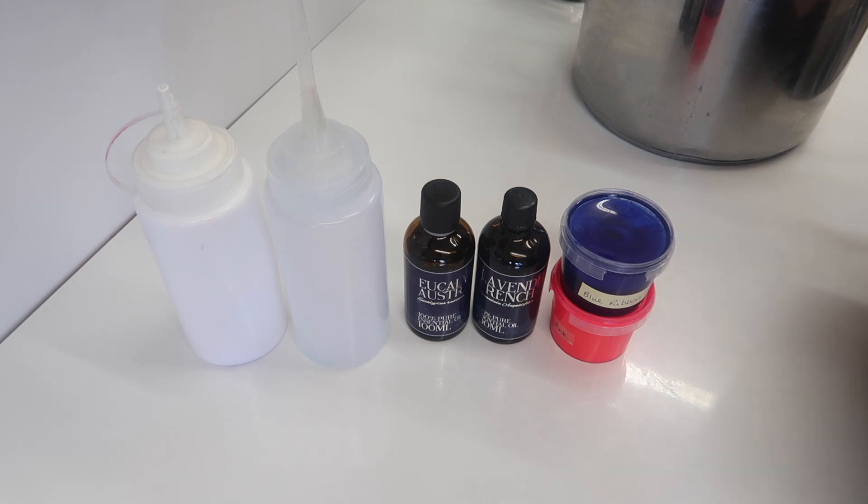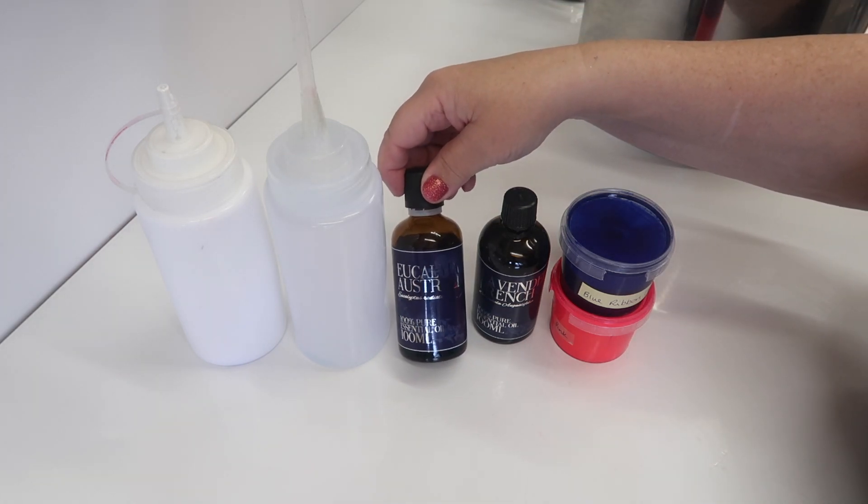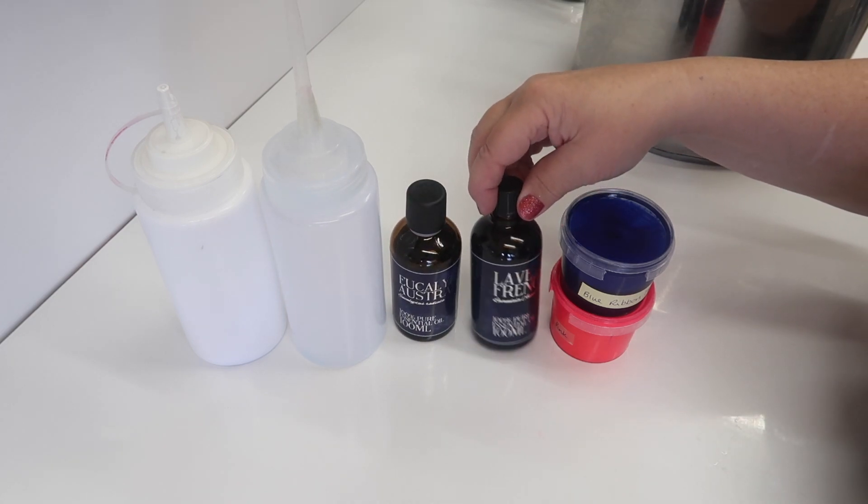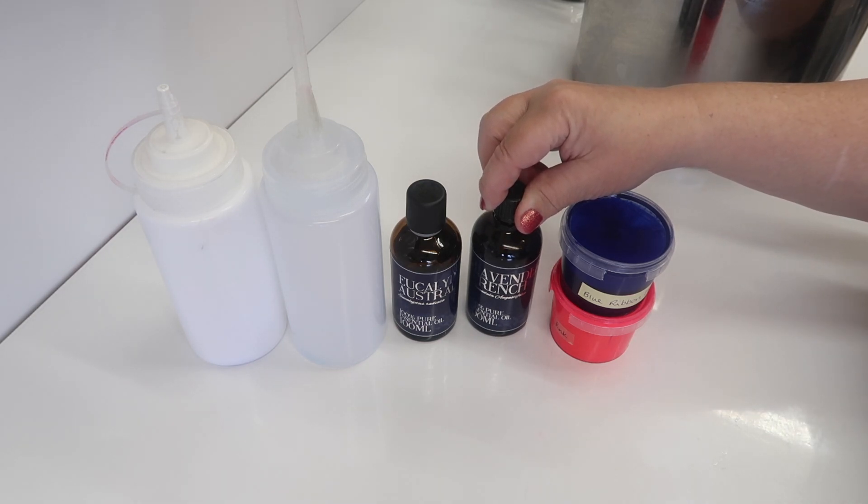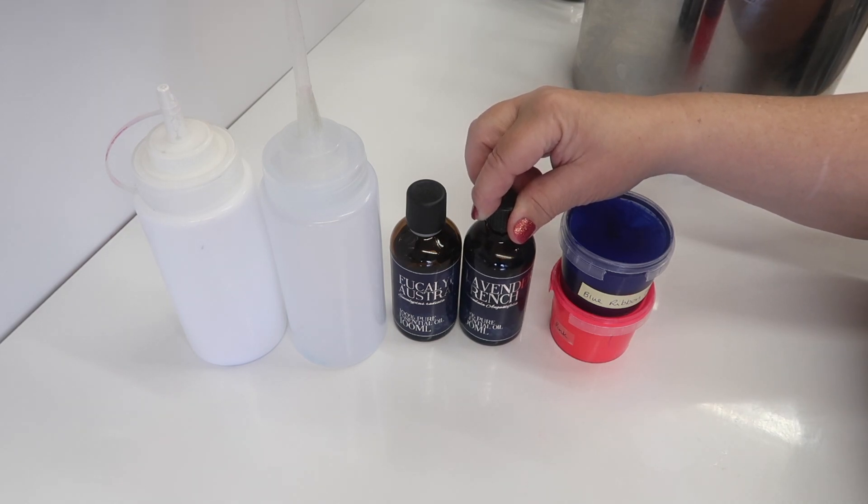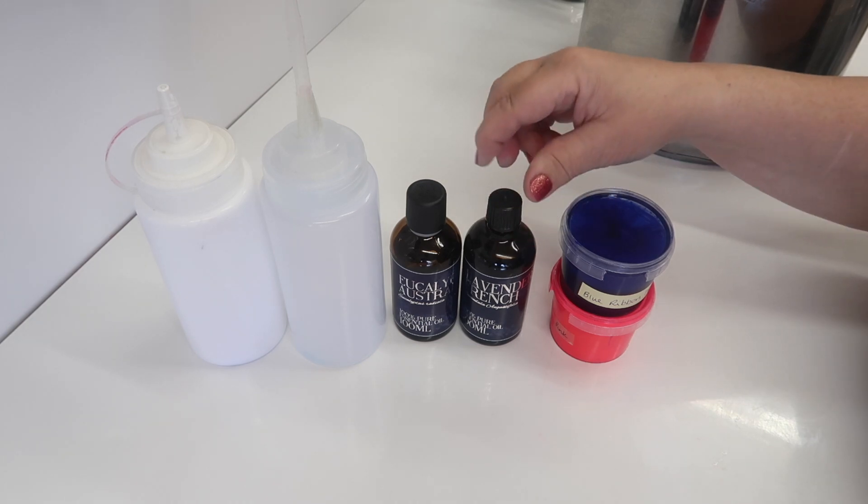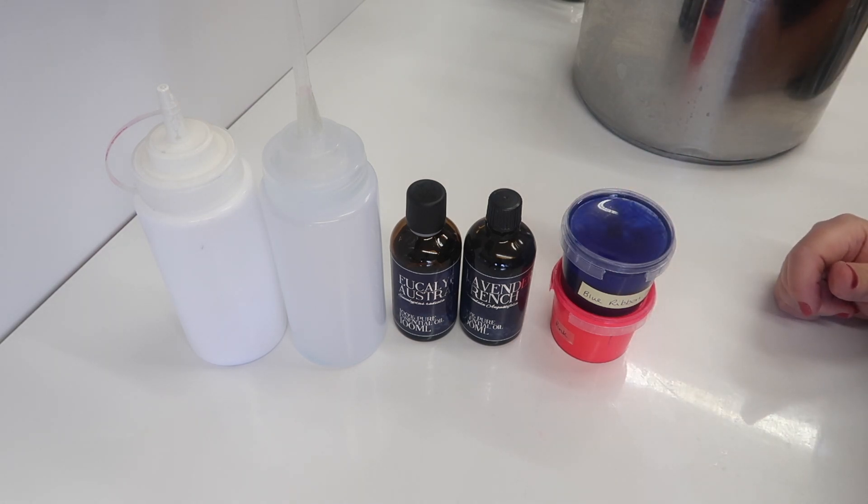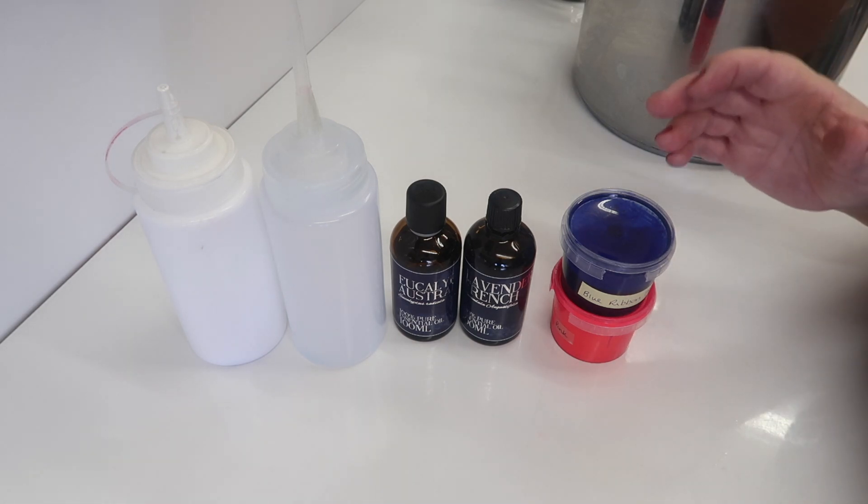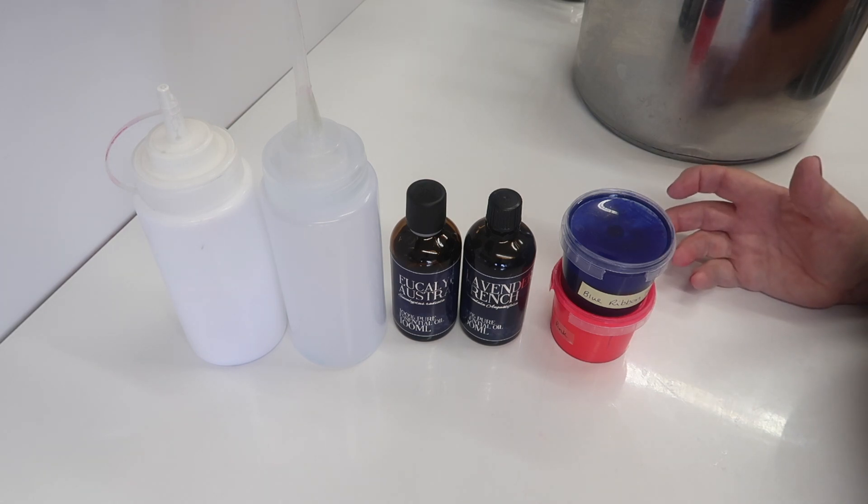We're using Australian eucalyptus oil today and French lavender. You can't beat French lavender, it's absolutely beautiful. I'm not a huge lavender lover, I'm much more of a rose girl, but French lavender is just warmer and nicer, not as medicinal as regular lavender is. We're also using colors because the dot mandala soap we made the other day had three gorgeous colors that looked so beautiful with titanium dioxide.